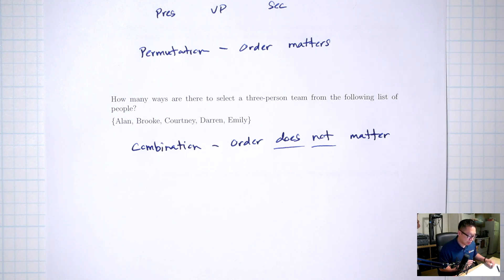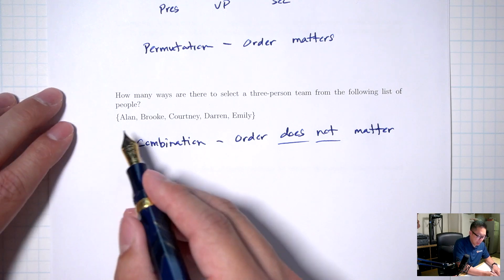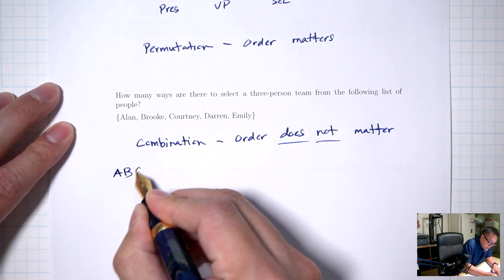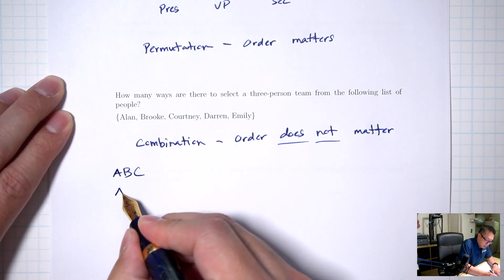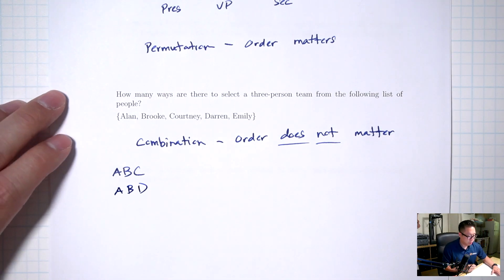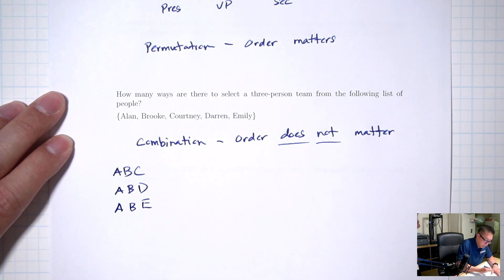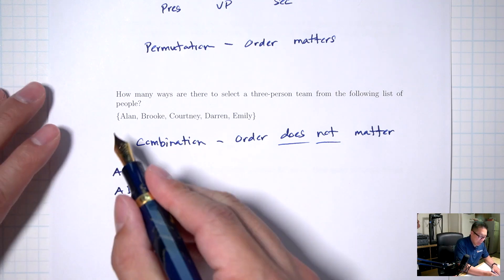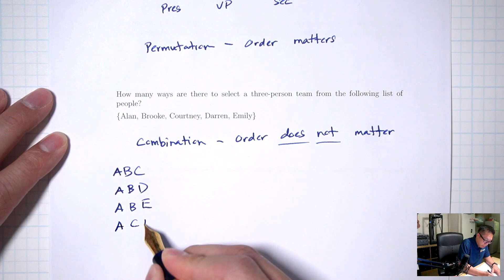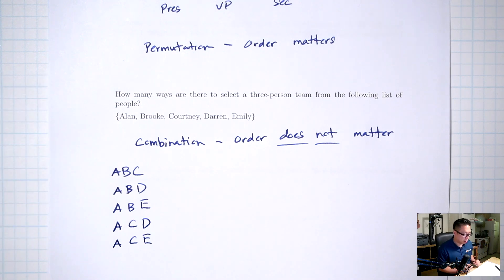The first scenario we've talked about already — it's similar to one of the questions on your lab. Using the counting principle from the last lecture, we need to decide how many blanks we need. I'm choosing a president, a vice president, and a secretary — three blanks. For president, how many options do I have? I have five people, so five options.